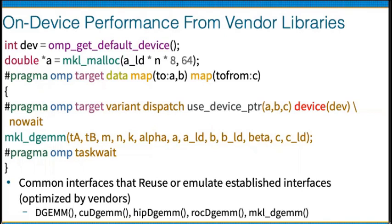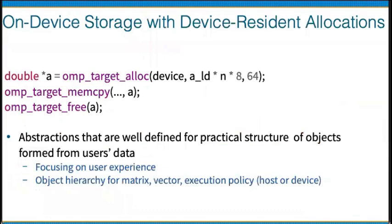We use common interfaces that either reuse or emulate established interfaces, including DGEMM on the CPU, CUDA DGEMM on NVIDIA accelerators, HIP DGEMM on AMD accelerators, rocBLAS DGEMM for low-level access to AMD devices, and MKL DGEMM on Intel GPUs. To make memory allocations portable across devices, we use OpenMP target allocation routines — omp_target_alloc for allocating memory, omp_target_memcpy for moving data between the accelerator and CPU, and omp_target_free to release memory for other computational libraries.